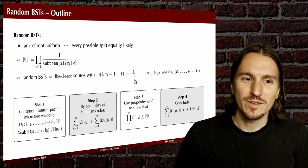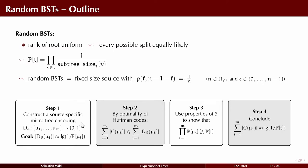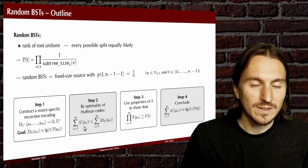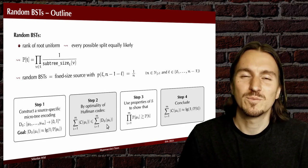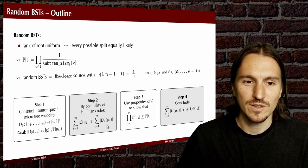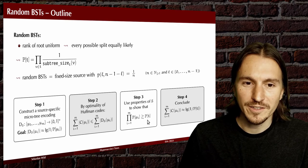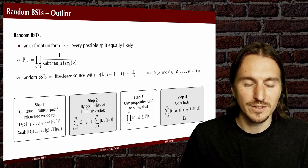We'll proceed in four steps with this analysis. First, we construct a source-specific code for micro trees — one that knows the source being used. We use that to show that a given micro tree is encoded with essentially the correct number of bits, namely log of one over the probability. One can show this is exactly what must be achieved. The second step is to show that we can use a Huffman code instead of the source-specific code, and that only makes things better.